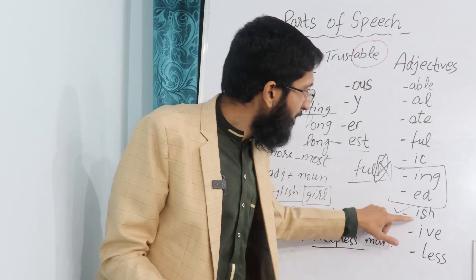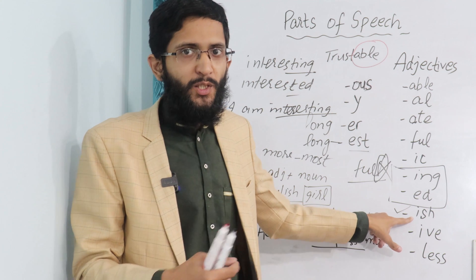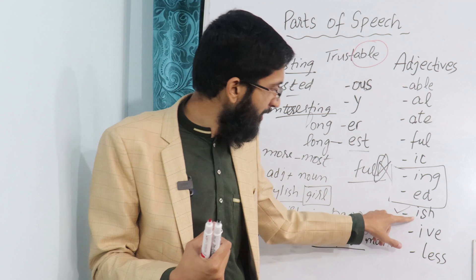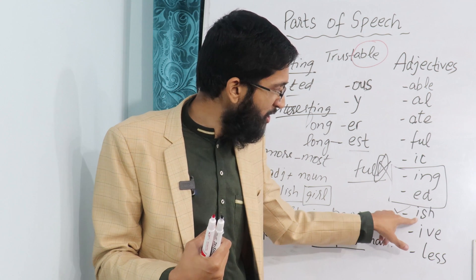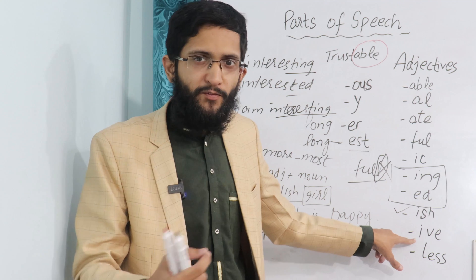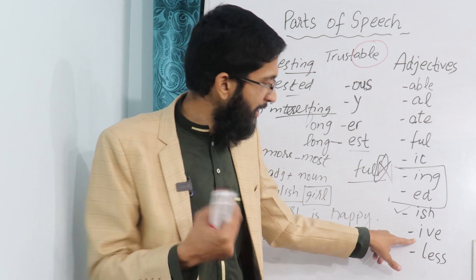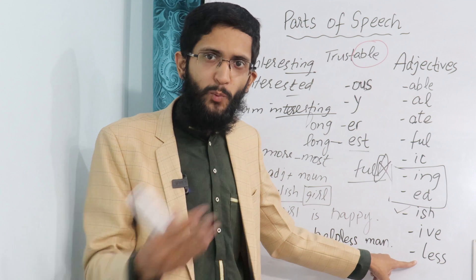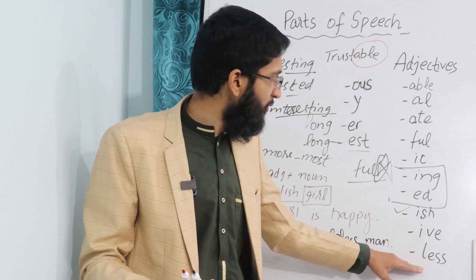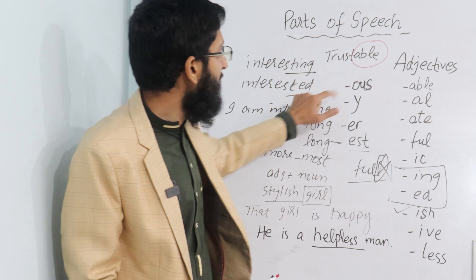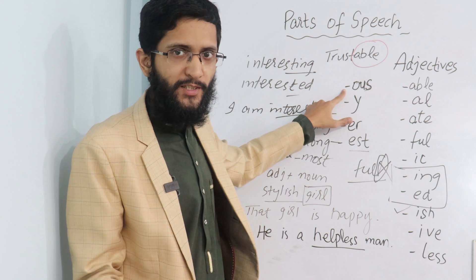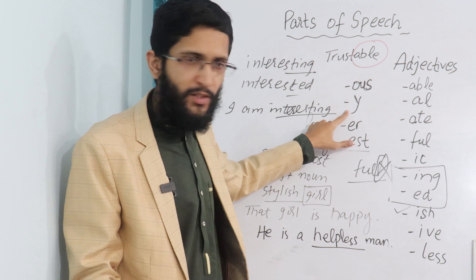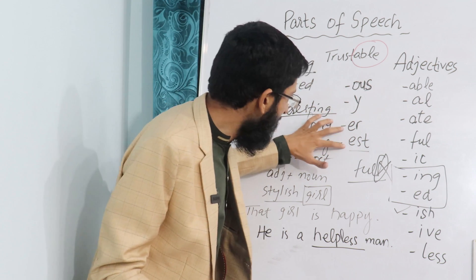Then you see '-ish': stylish. Like, he is a stylish man — you see ISH at the end. Then '-ive': expensive, selective. These are adjectives. Then '-less': very common — hopeless, worthless, helpless. And then '-ous': dangerous — OUS coming at the end. Then '-y': happy, fluffy.